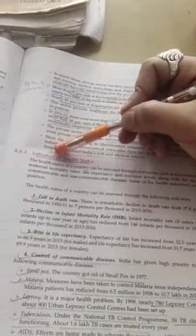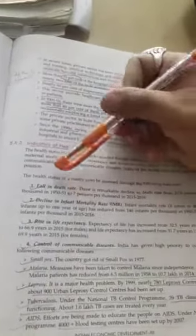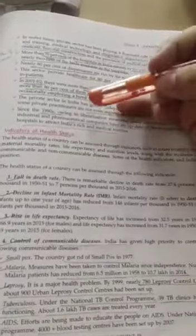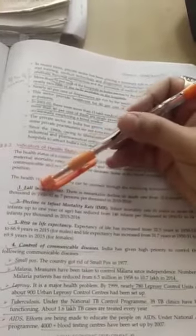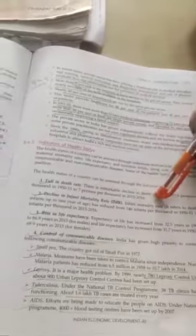So the indicators of health status are first fall in death rate. If our death rate is reduced, then we say that our people are healthy. Now look, there is a remarkable decline in the death rate from 27.4 persons per thousand in 1950-51 to 7 persons per thousand in 2015-16.